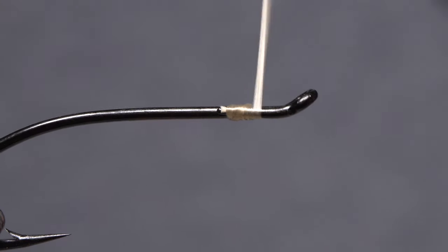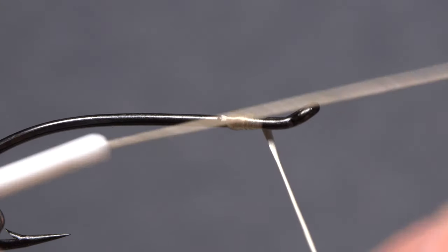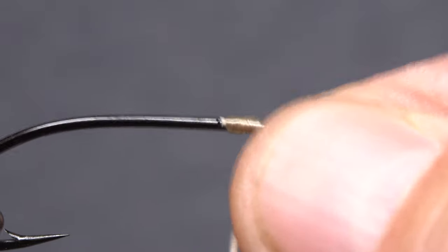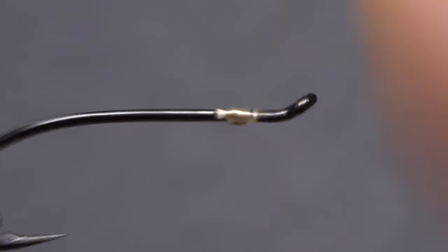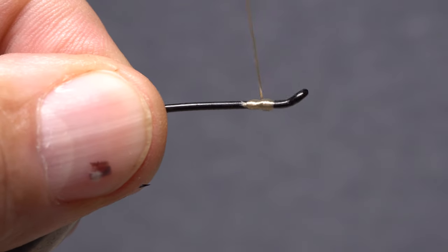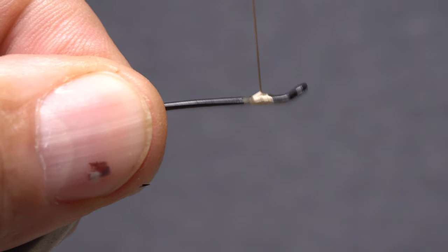Being able to reverse the direction of thread wrap is a valuable fly tying skill. You'd think a simple half hitch would do the trick, but it really doesn't, as you can see here. Even a 4 or 5 turn whip finish has a tendency to not work well with counter wraps.